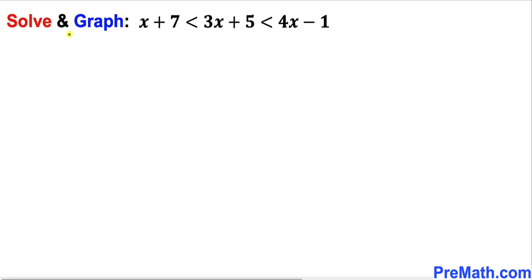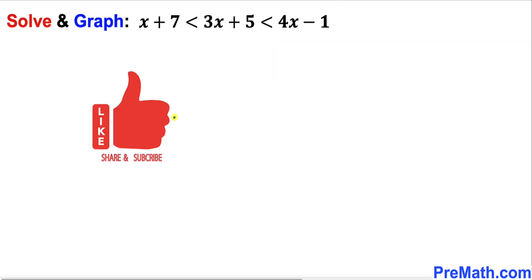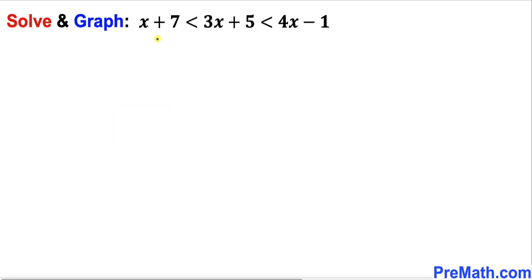Welcome to pre-math. In this video we are going to solve and graph this given compound inequality: x plus 7 is less than 3x plus 5 and less than 4x minus 1. Let's go ahead and get started with the solution.